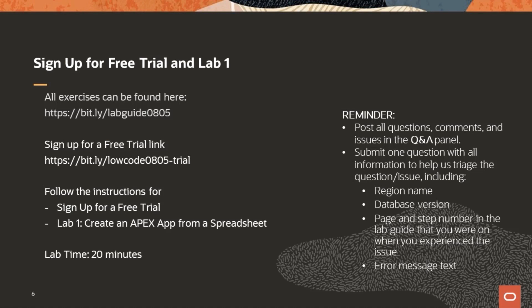For those that already have an Oracle Cloud free trial account, please go to the lab guide link and follow the instructions in the prerequisites, introduction, and lab one. This will walk you through how to create an ATP instance, create an APEX workspace, and create your first APEX application. For those that want to follow along, we will show you a quick demo on creating an ATP instance, creating your APEX workspace, and creating an app from a spreadsheet. If you don't want to follow along, that's okay — please feel free to work at your own pace following the instructions in the lab guide.